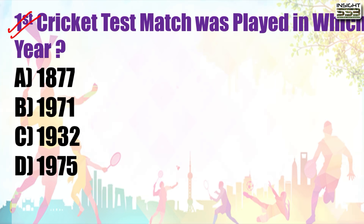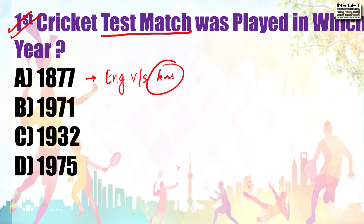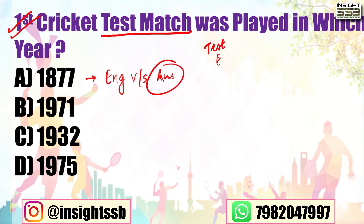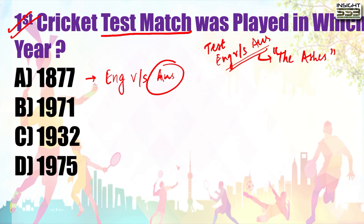The first cricket test match was played in which year? The first matches - whether test match or one day international - tend to be important in terms of cricket. It was played for the first time in 1877 between England and Australia, and the winner was Australia. This format - test cricket between England and Australia - is associated with a trophy called the Ashes.